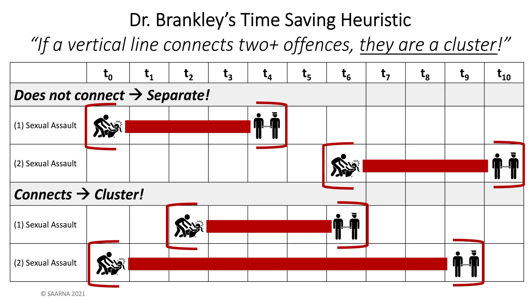Think of drawing a horizontal red line from the beginning to end of the four elements in each row. Then try to draw a vertical blue line to separate the rows into units. If you can get a clean line, they are separate. If, however, the lines overlap, you have a cluster. Remember this, and clusters will be as easy as singing the alphabet.